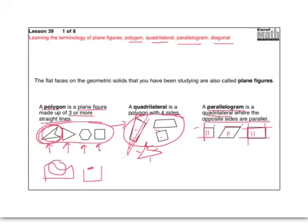How about this shape right here — do you think that's a parallelogram? Well, the bottom and the top are parallel to each other; they would just keep going without intersecting. But the left side and the right side are not parallel — they would come up and meet somewhere about right in there, and so that's not a parallelogram.